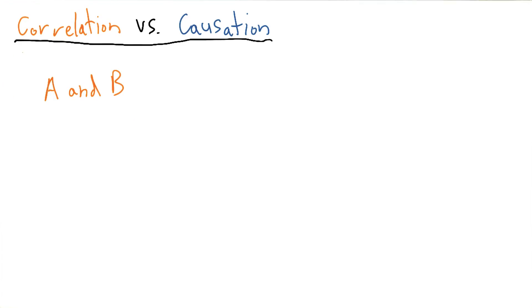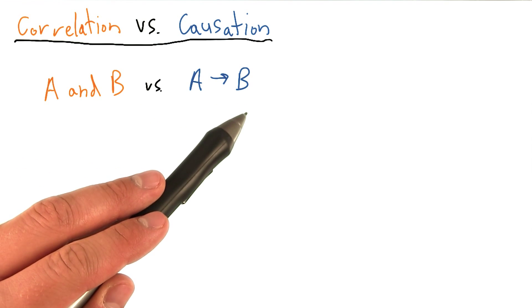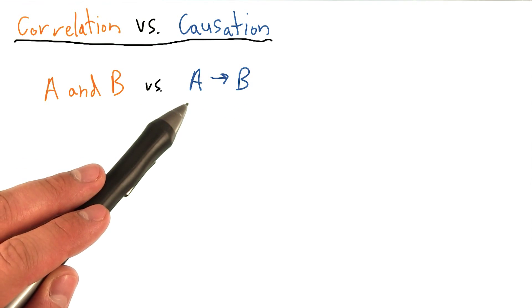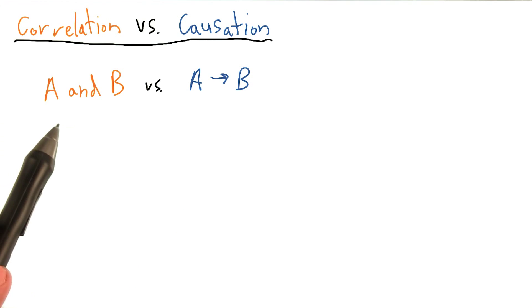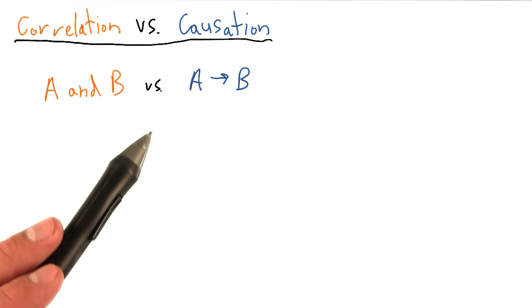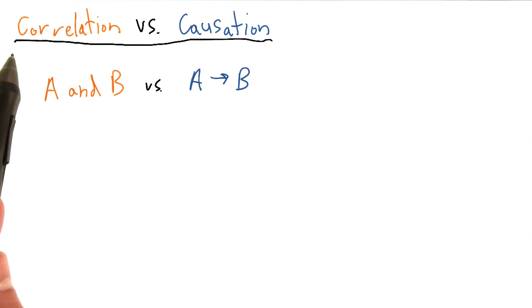You could also have an anti-correlation where when A goes up, B goes down. The difference with causation is typically one event happens before the other. In this case, if A, then B. Causation is often a much stronger assumption in effect than merely a correlation.